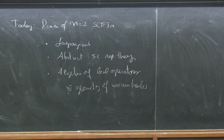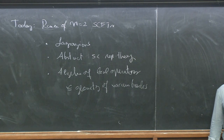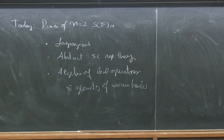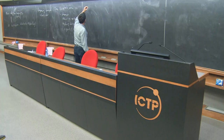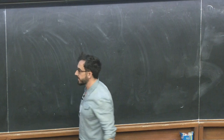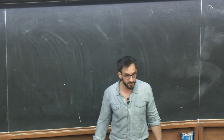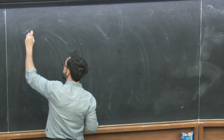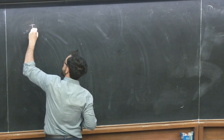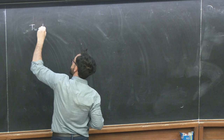I will tell you how the algebra of local operators is useful — that will be my basic organizing principle — and try to connect that also with the geometry of vacuum branches. So, assuming the basics of supersymmetry, I just want to remind you of the basic elements. There are two types of supersymmetric multiplets that we will consider.